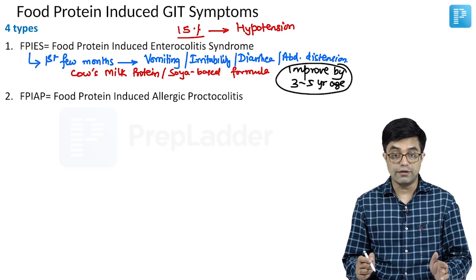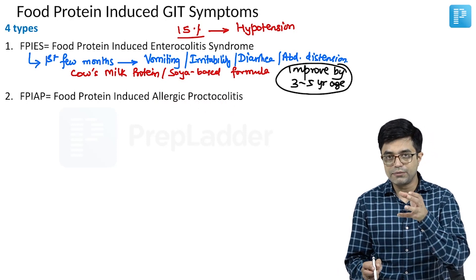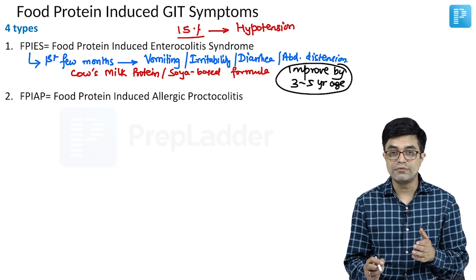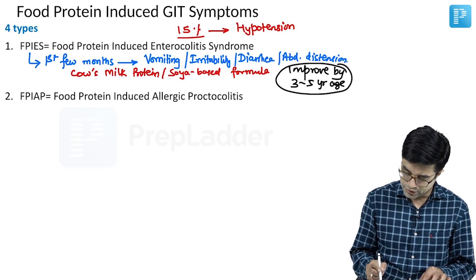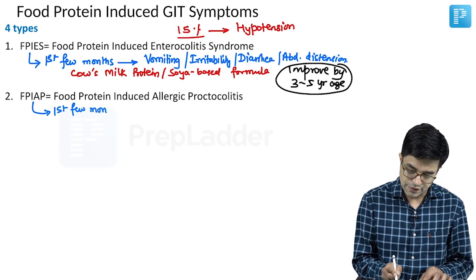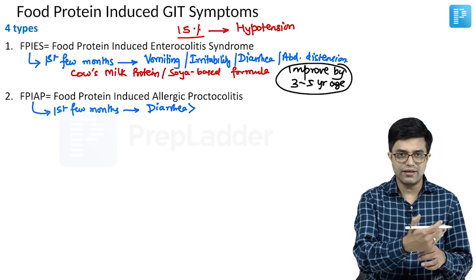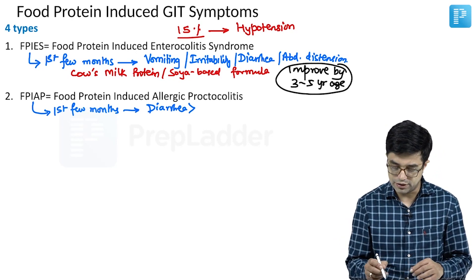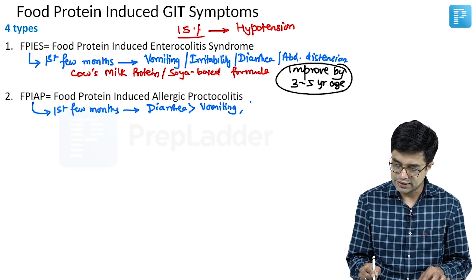The second category is FPIAP, which stands for Food Protein Induced Allergic Proctocolitis. As you can well imagine, the symptoms are more restricted towards the large intestine, so diarrhoea is the predominant symptom, although vomiting can be seen in about 50 to 60 percent of individuals. These children present in the first few months of life with features like diarrhoea, which can be protracted, prolonged, or rarely bloody diarrhoea. Along with diarrhoea, they can also have features like vomiting and abdominal distension.